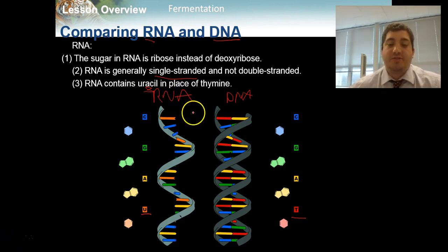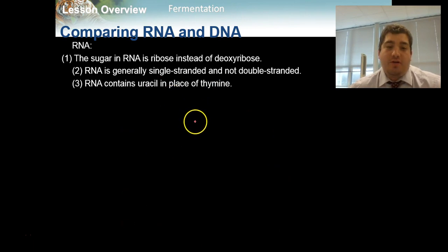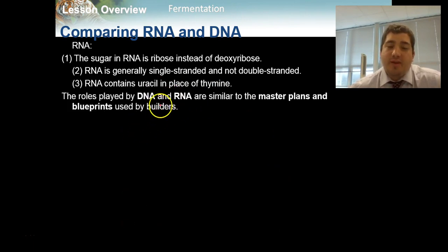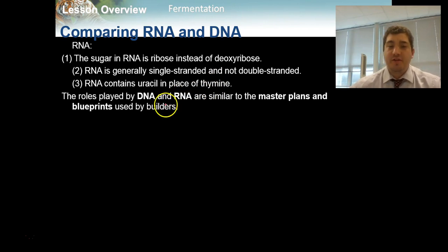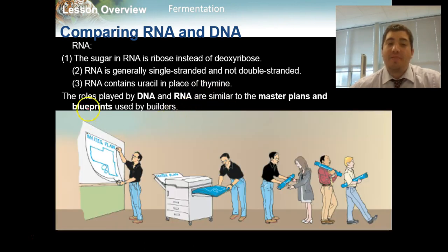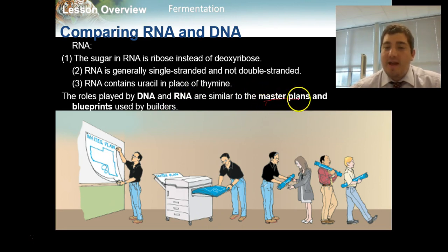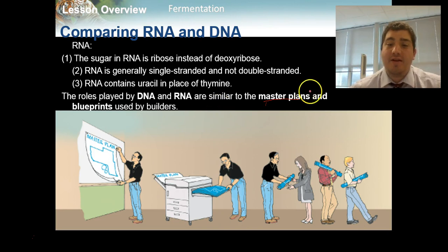RNA is a nucleic acid which is very similar to DNA and plays a crucial importance in cellular life. The roles played by DNA and RNA are similar to master plans and blueprints used by builders or engineers. If you've seen someone building a house, you'll see blueprints — rough copies which construction workers bring to a site that tell them how to build something. That's different than a master plan, which is a big idea engineers and architects come up with in an office. So we could have a master plan for a building which is kept somewhere safe.